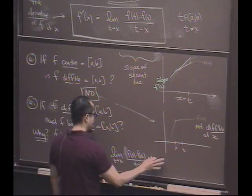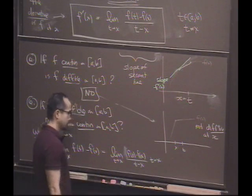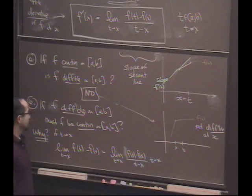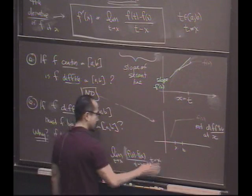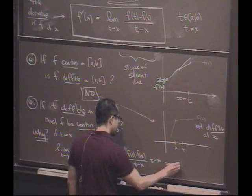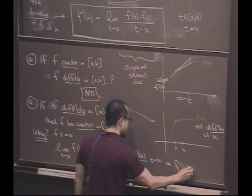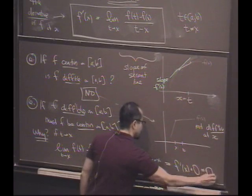f prime. And what's the limit of this thing? Zero if it exists. And if it's differentiable, this exists. And this is clearly zero. So, this actually is going to be f prime of x times zero, which is zero. Check.